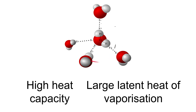Now when we need to change the state of a substance we need to allow the molecules to start to move past one another and then eventually to break away from one another so that we move from a solid into a liquid into a gas. Now these hydrogen bonds hold the molecules together so they prevent that from happening. Because of this we say that water has two thermal properties.